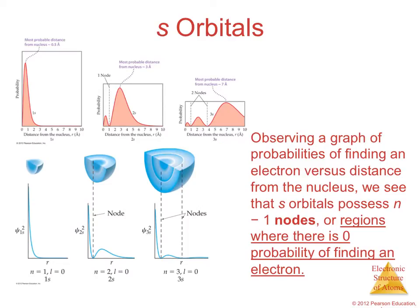So if we look at a graph of probabilities of finding an electron versus the distance from the nucleus, we actually see that these s orbitals possess what are called nodes. Now the number of nodes is based on the value of n, because it is n minus 1 for number of nodes. So a node is a region of space where there is a 0% probability of finding an electron. So if you take a look at each of these graphs, the 1s has 0 nodes. The 2s has 1 node right here. So what that means is in this one single space, there is 0% chance of finding an electron. The 3s has 2 nodes, and so on.